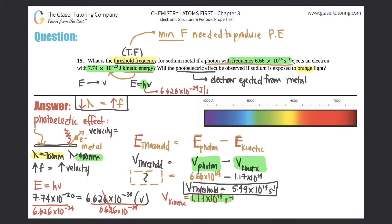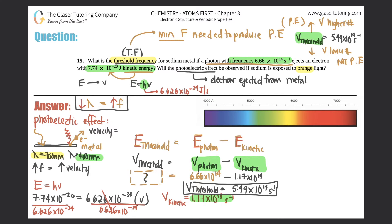The threshold frequency is 5.49 times 10 to the 14th cycles per second. This means anything with a frequency higher than this will produce the photoelectric effect, and anything with a lower frequency will not. Whether electrons are ejected depends on whether the frequency exceeds this threshold. Now for the second part: will the photoelectric effect be observed if sodium is exposed to orange light?